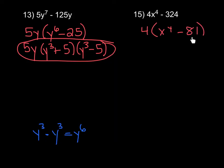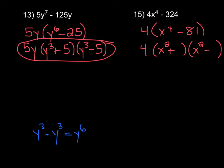Now looking at x to the 4th minus 81, both terms are perfect squares. Since it's a difference, I'm going to factor it further. We bring down the 4 and open up two sets of parentheses. The square root of x to the 4th is x squared, so we put that in the first spot in each parenthesis. We make one addition and one subtraction, and since the square root of 81 is 9, we put 9 in the second spot. Now x squared minus 9 is another difference of perfect squares — so we can factor further.